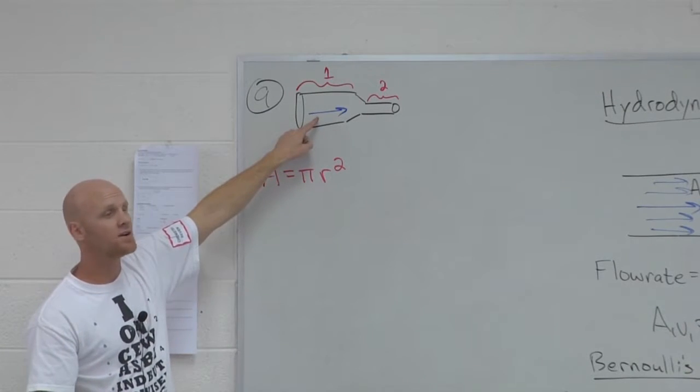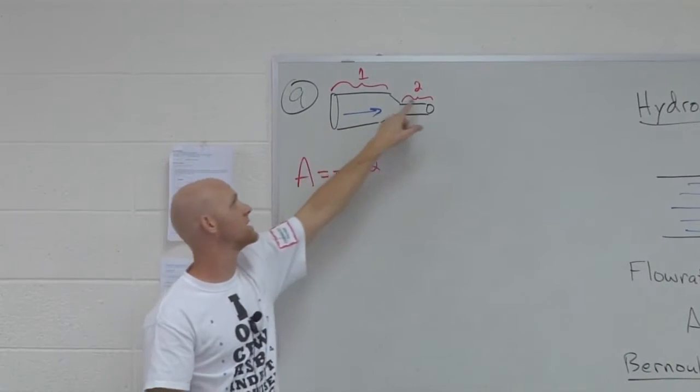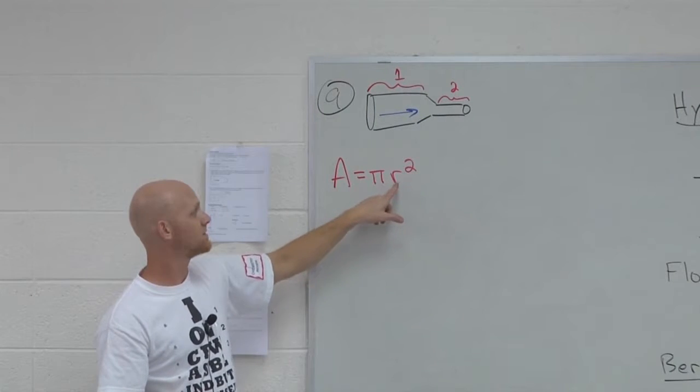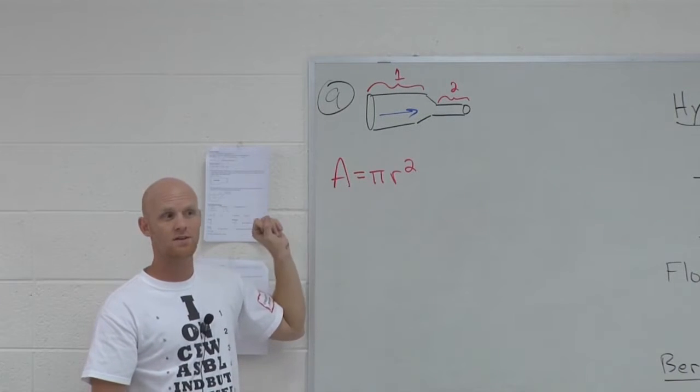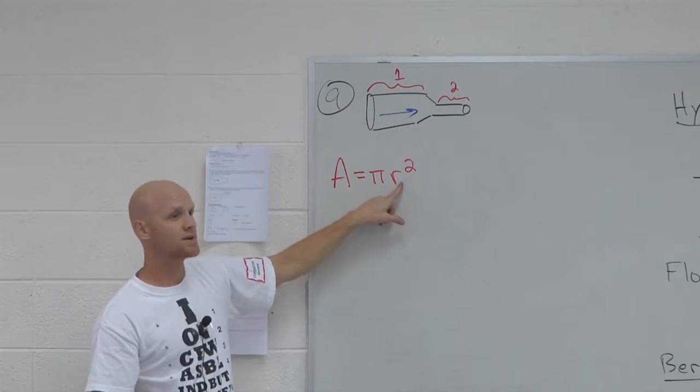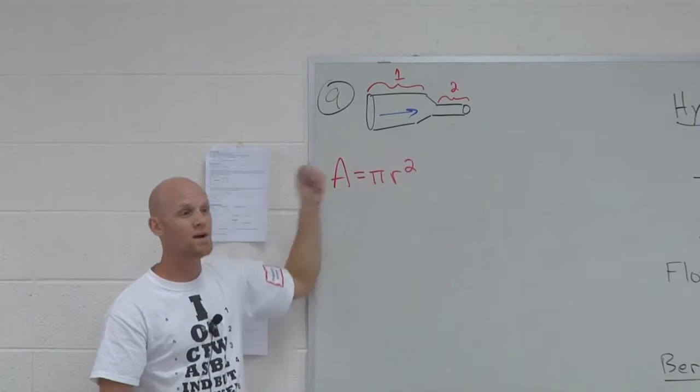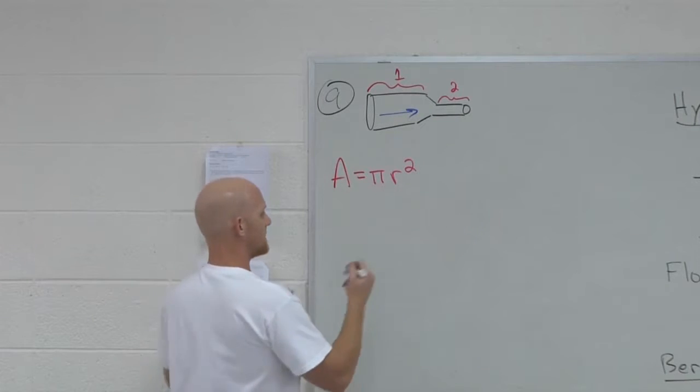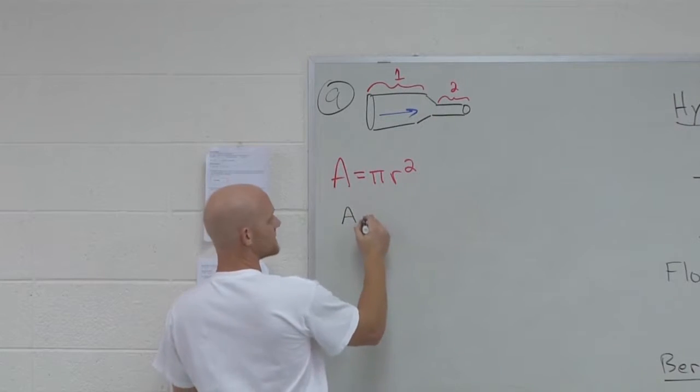And so in this case, how many times greater is the area in region one than in region two? Oh, the radius is three, but the area, the radius gets what to get the area? Pi r squared. So if the radius is three times bigger, the area would be three squared times bigger, nine times bigger. Cool. And if you look at what ultimately our equation of continuity tells us.